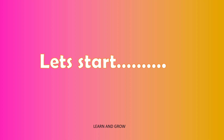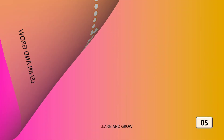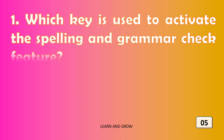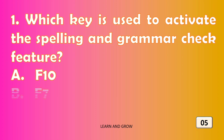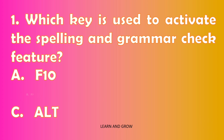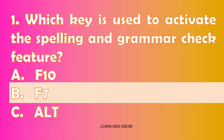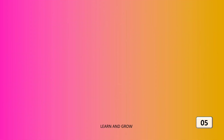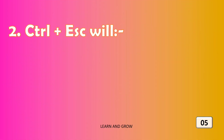Let's start. Which key is used to activate the spelling and grammar check feature? Options are: A) F10, B) F7, or C) Alt. The right answer is option B — F7.